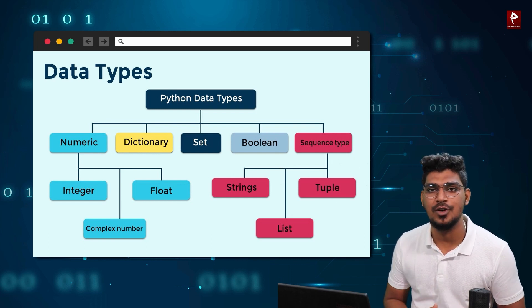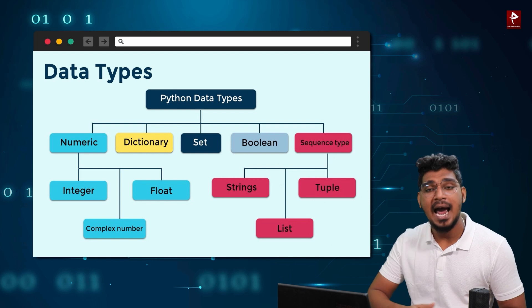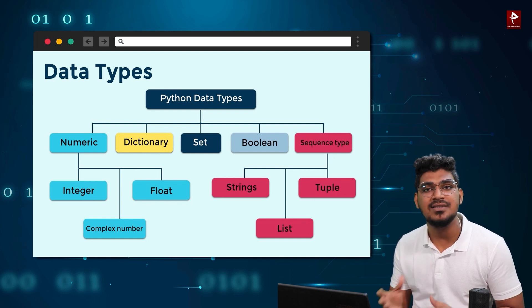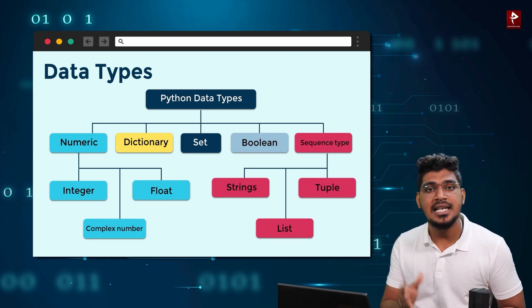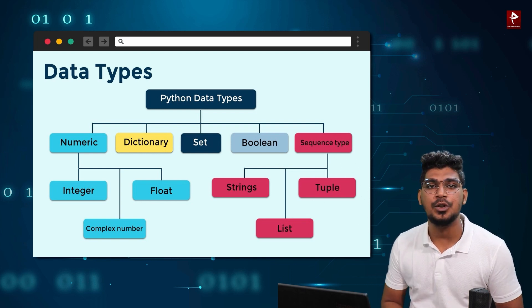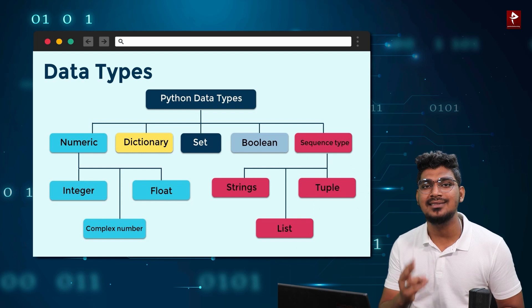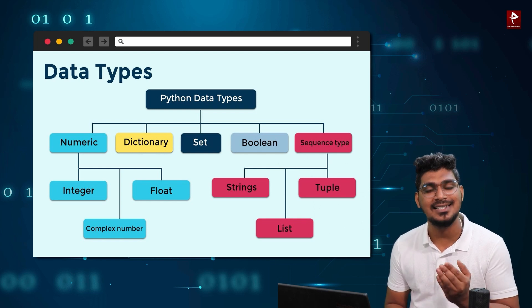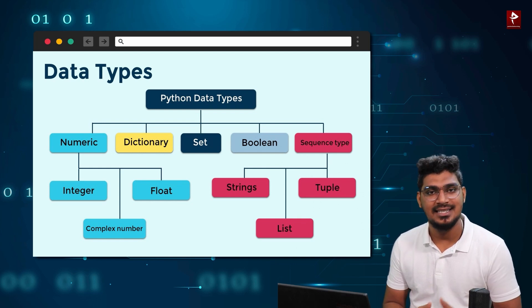Boolean is true or false. And Set data type. And Sequence data type. There are 3 types of data types: String, List, and Tuple.